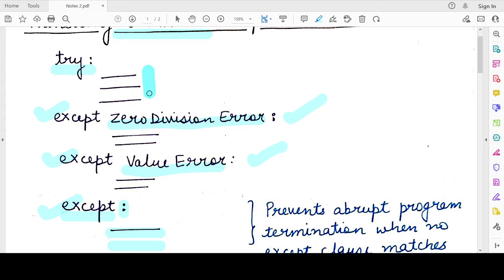So if the try block leads to a zero division error, then the first except clause will be executed. If the try block causes a value error, then the second except block will be executed.